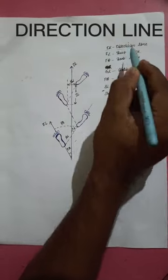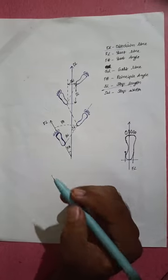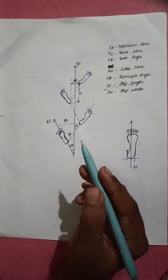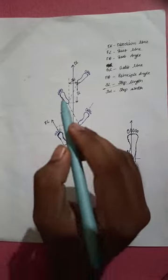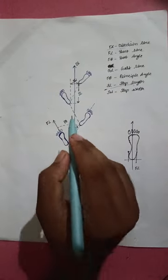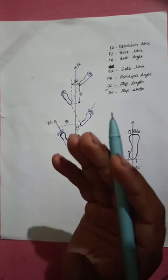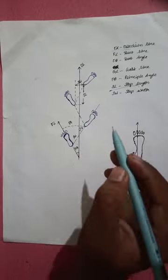The direction line is an imaginary line which indicates the direction in which the person is walking or moving. It is a straight line situated in the center of left and right foot, which passes through the center of step width.